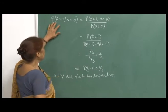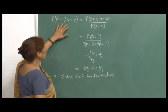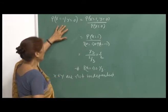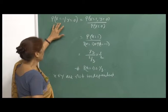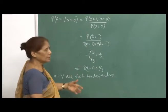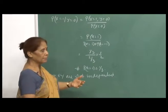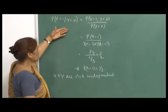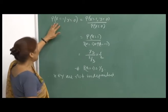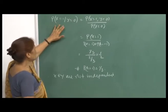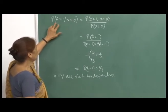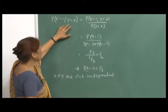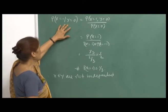We showed that covariance of X and Y is 0, but of course by definition it was also clear that X and Y are not independent. We can also show this analytically by considering the conditional probability P(X=1, Y=0 | Y=0), that is P(X=1 | Y=0).